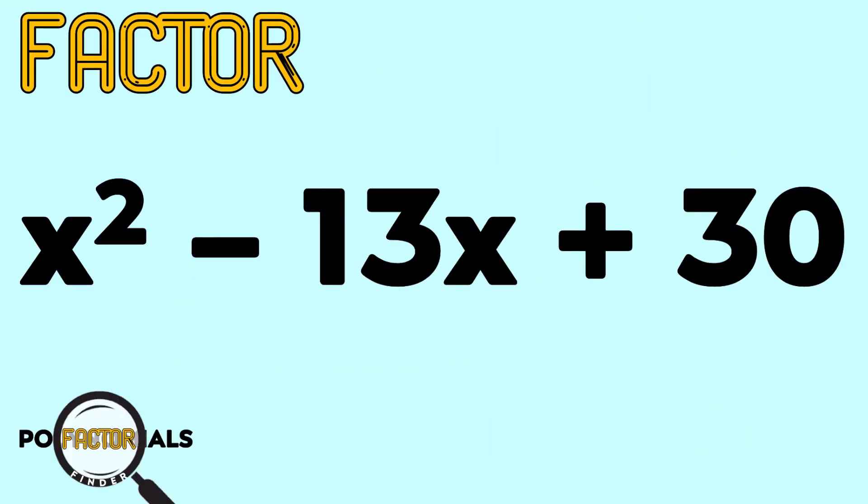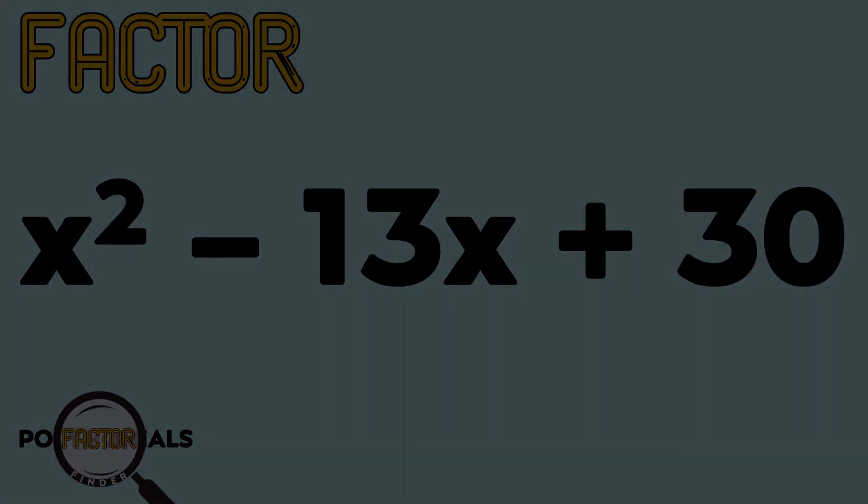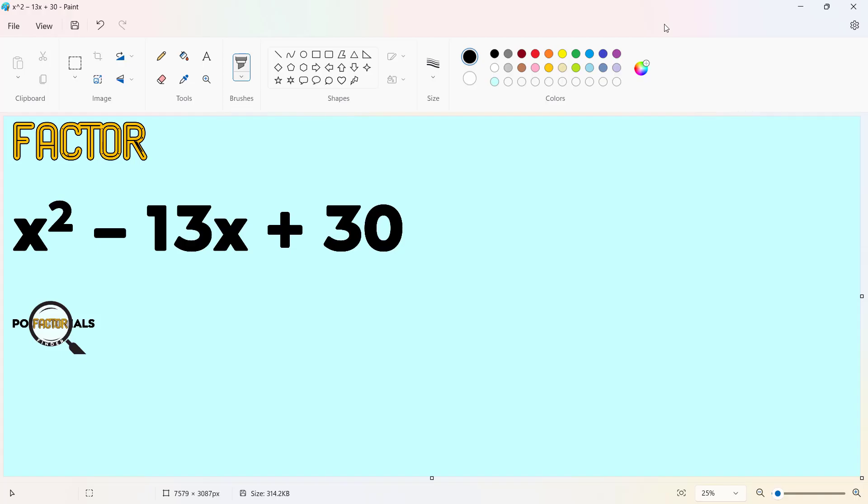Let's start with this polynomial. We have x squared minus 13x plus 30, and we are tasked to factor this. This is a quadratic trinomial.